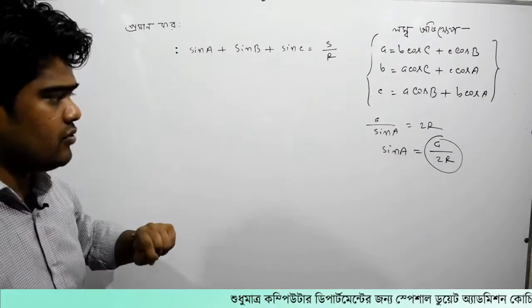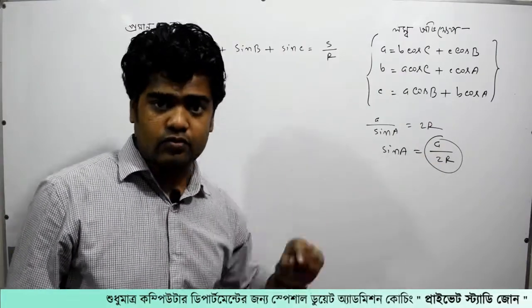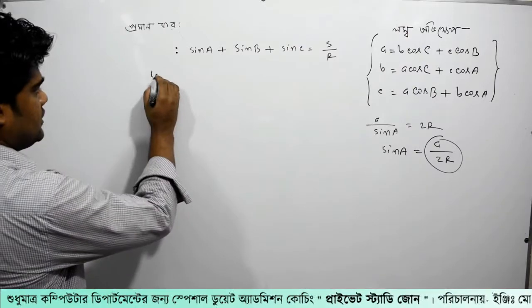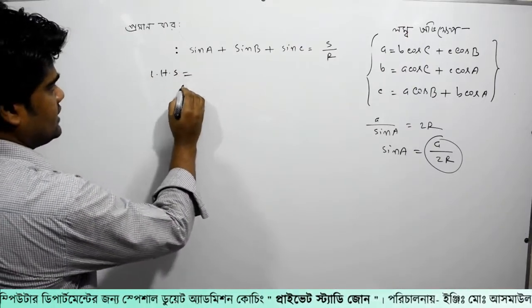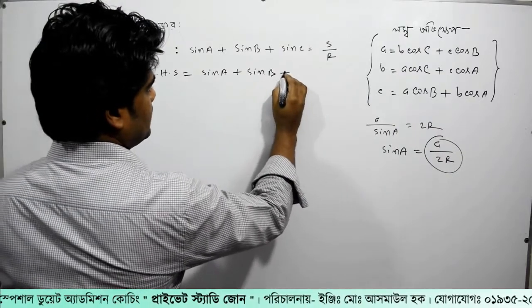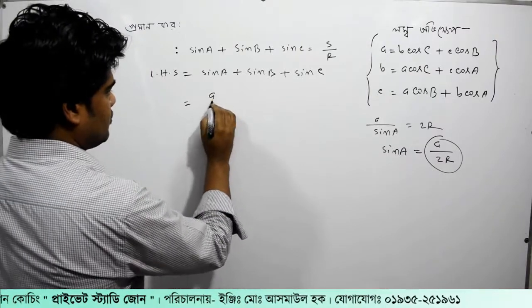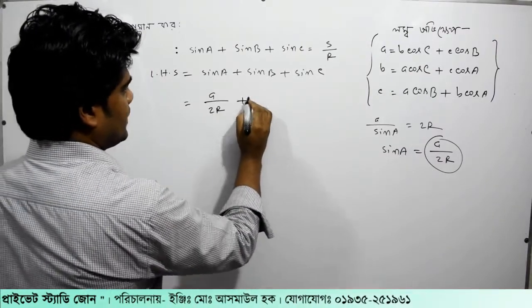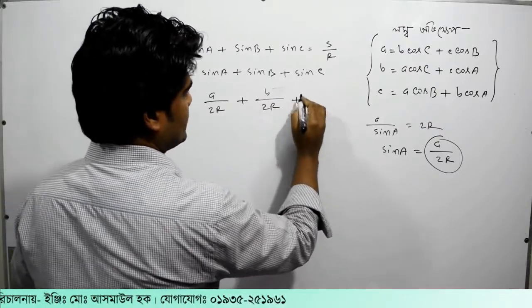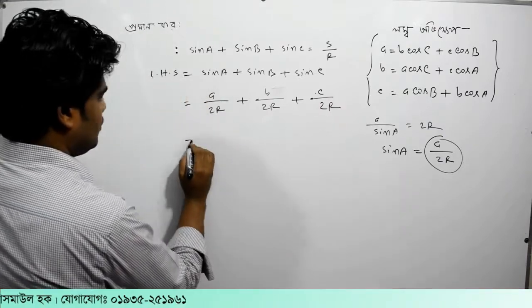Sin b equal to b by 2r. Sin c equal to c by 2r. This gives us sin a plus sin b plus sin c equal to a by 2r plus b by 2r plus c by 2r.